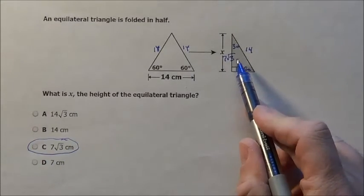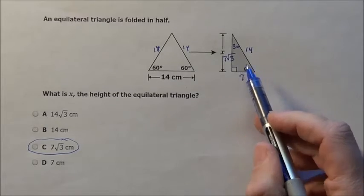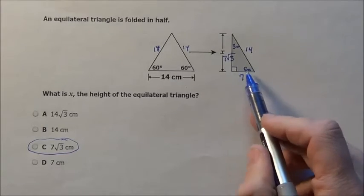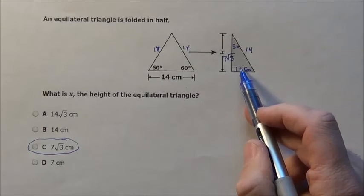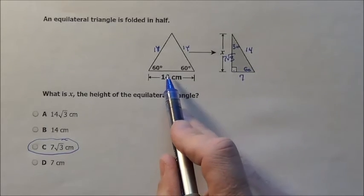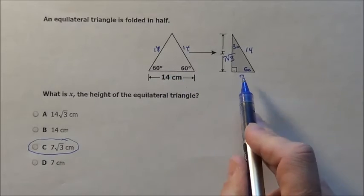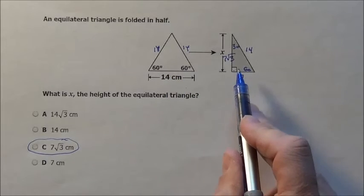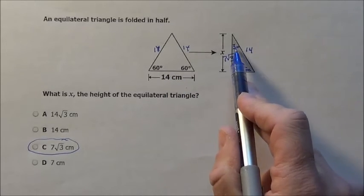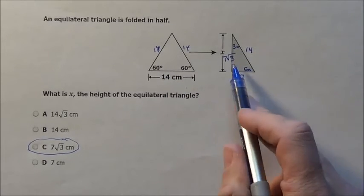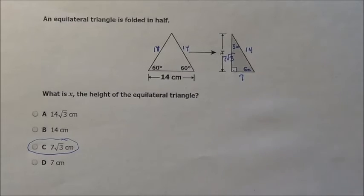They're having you work a 30-60-90 triangle, but not giving you the exact picture — making you know that you have to break that in half to get 7, and noticing that it's 90, 60, and 30: a 30-60-90.